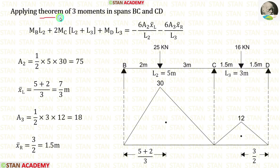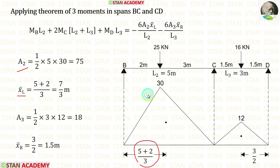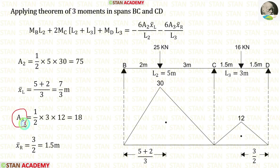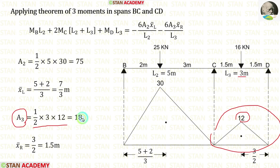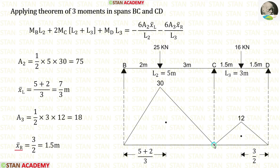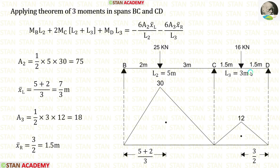Now let us apply the theorem of three moments in spans BC and CD. Area 2 is already calculated. Let us calculate x̄ left using the formula (L + A)/3. Here L is 5 and A is 2, giving 7/3 m. Now let us calculate area 3. For the triangle: ½ × breadth × height = ½ × 3 × 12 = 18. For x̄ right, it is a symmetrical diagram, so the centroid lies at the center: 3/2 = 1.5 m.